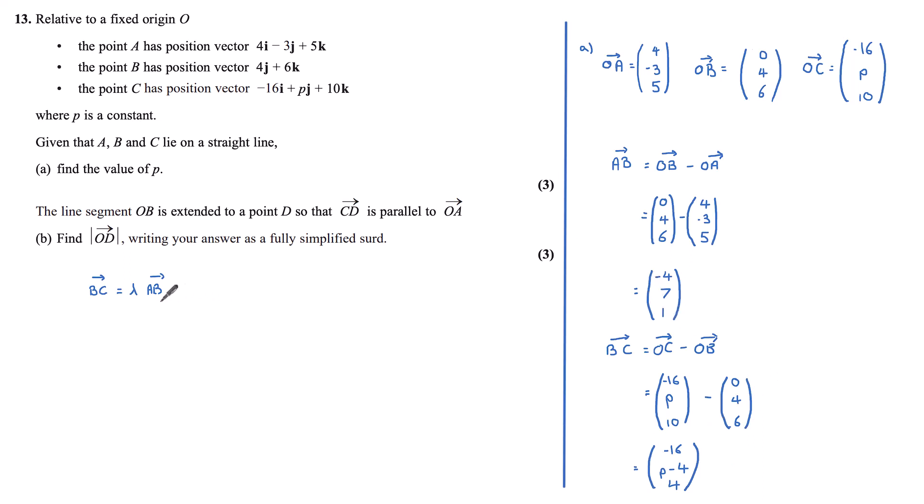And the reason I'm doing that is if we substitute in our values of BC for AB here, we can see we've got (-16, p-4, 4) for BC, and (-4, 7, 1) for AB. Looking at the i components and the k components here, I may be able to see already that there is a multiple of 4 seemingly occurring.